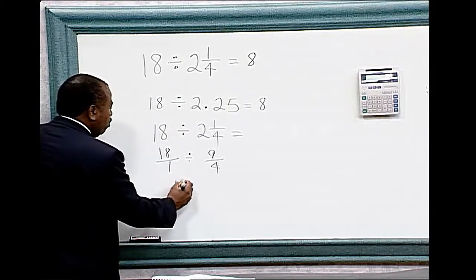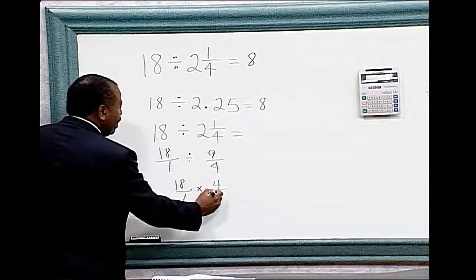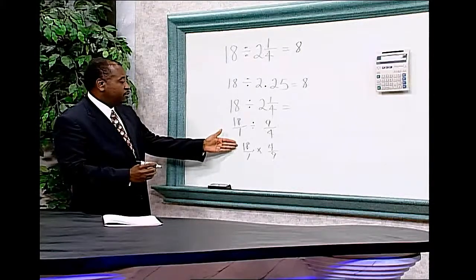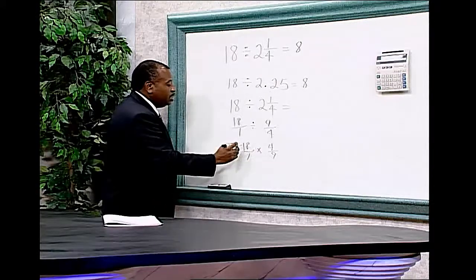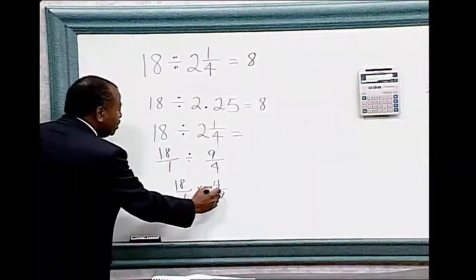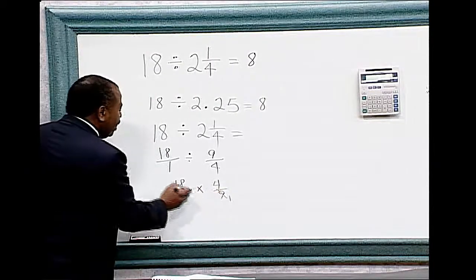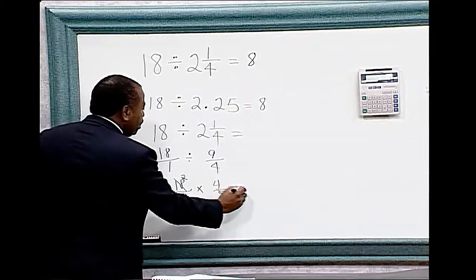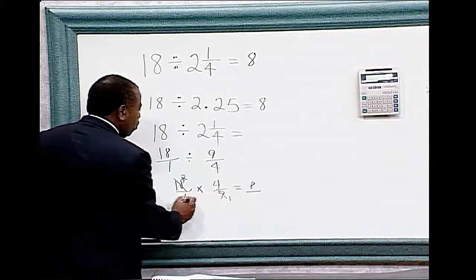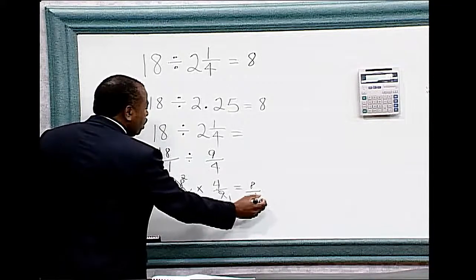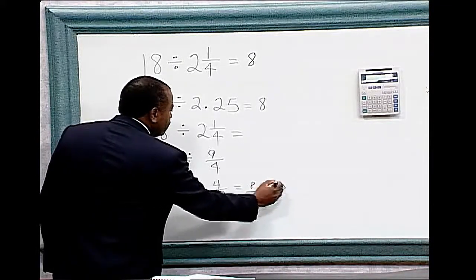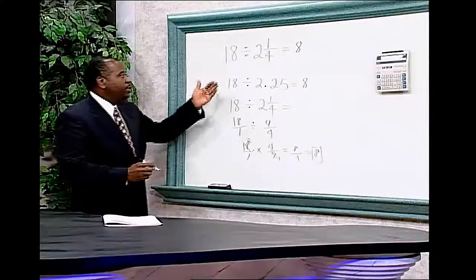18 over 1 times 4 over 9. We can utilize the method called cancellation. 9 and 18 contain a common factor. 9 will divide into 9 one time, 9 will divide into 18 two times. 2 times 4 equals 8, 1 times 1 equals 1, 8 divided by 1 equals 8.